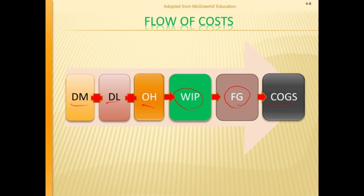To review: direct material, direct labor, and overhead — upon processing, these are reclassified into work in process. When finished, they go to finished goods. When sold, they are reclassified again to cost of goods sold. You collect your money and the cycle repeats again and again. You keep making products, selling them, collecting your money — and that's how you build wealth.